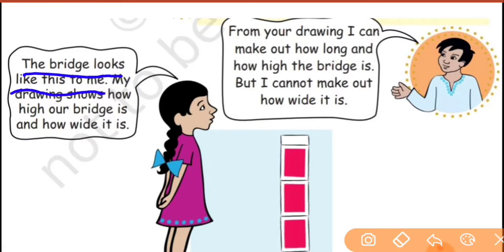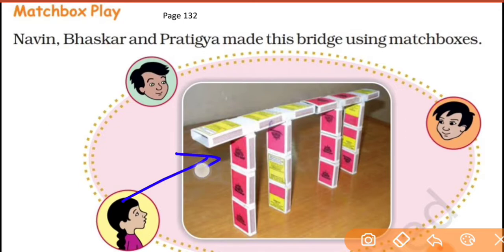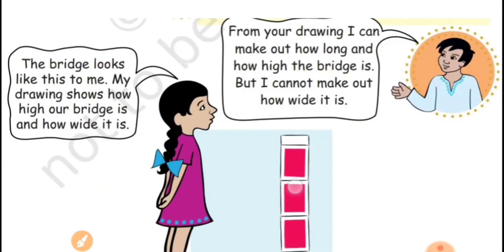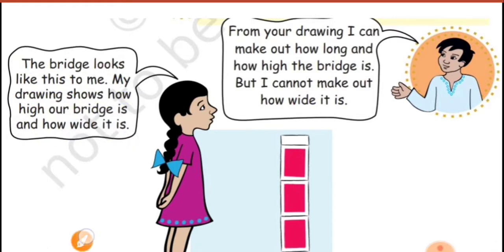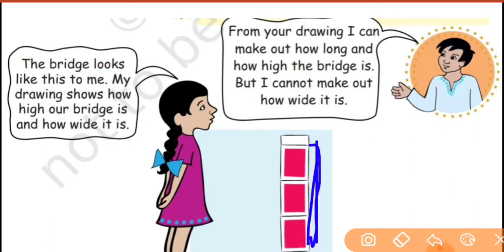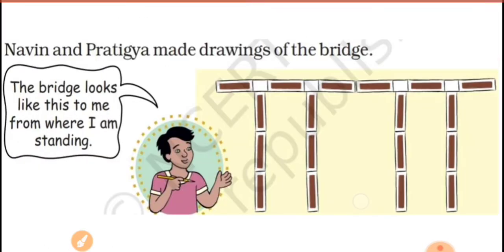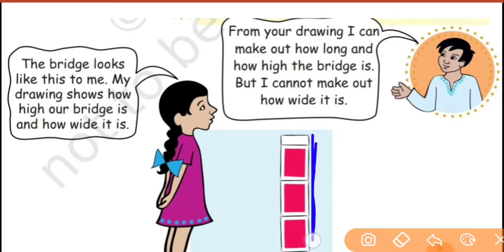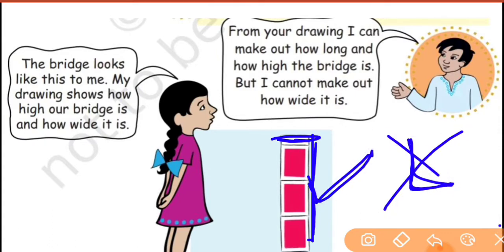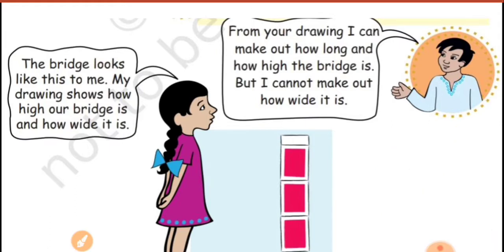The girl says: the bridge looks like this to me. My drawing shows how high and how wide the bridge is. From the girl's view, the pillars show the height and the width of the bridge is also visible. However, from this drawing you cannot get the length. So from this view, height and width are visible, but not the length.